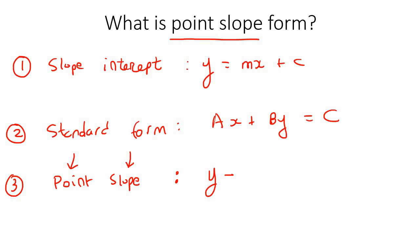y minus y₁ equals m(x minus x₁). So m is the slope, which is where we get 'slope' from, and then we're also going to substitute a point into the equation.